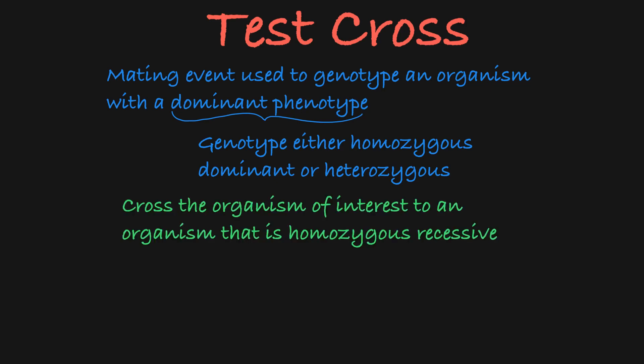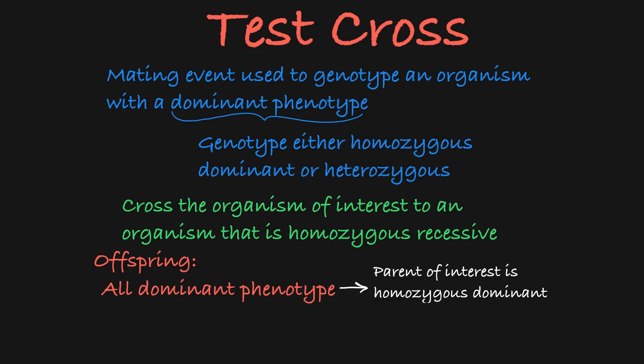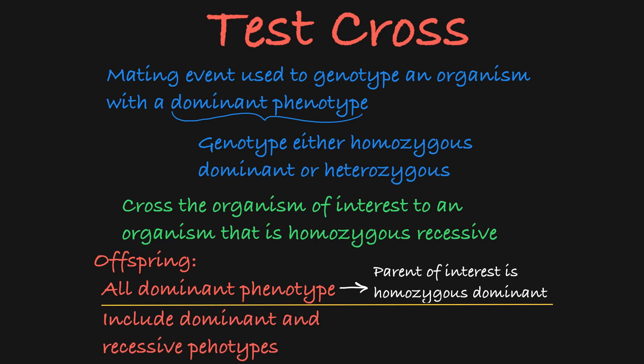We do this by crossing the organism whose genotype you want to know to an organism with the recessive phenotype. If the offspring of that cross all have the dominant phenotype, then you can infer that the parent in question is homozygous for the dominant allele. If the offspring include both dominant and recessive phenotypes, then you can infer that the parent is heterozygous, carrying both the dominant and recessive alleles.